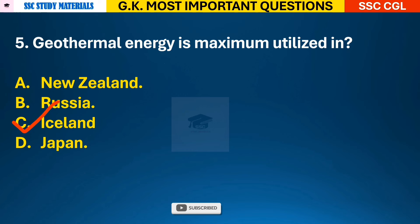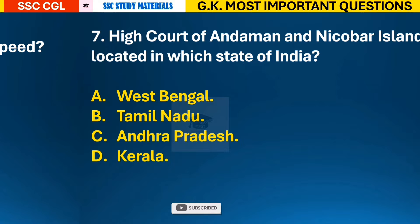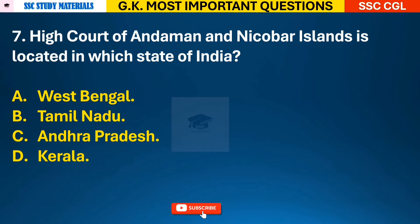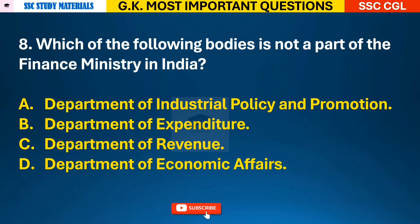Question 5: Geothermal energy is maximum utilized in? Answer C - it is maximum utilized in Iceland. Question 6: Which of the following controls the wind speed? Answer B - pressure gradient. Question 7: High Court of Andaman and Nicobar Island is located in which state of India? Answer A - it is located in West Bengal.